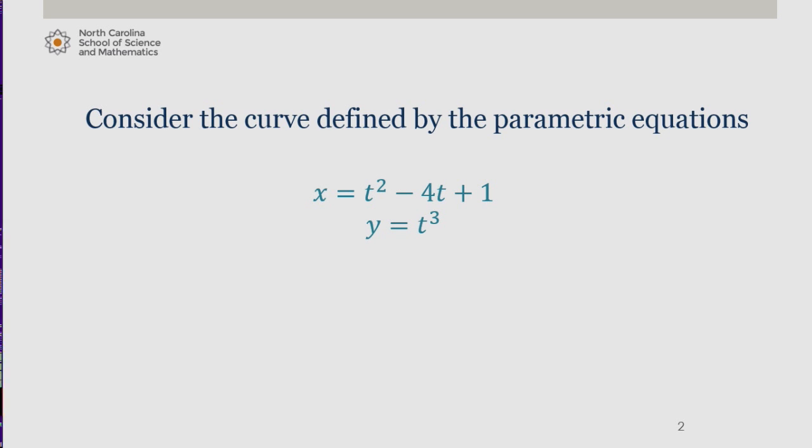An object traveling along the curve decides to go off the path and follow the tangent line to the graph after 3 seconds. Let's find the equation of this tangent line.